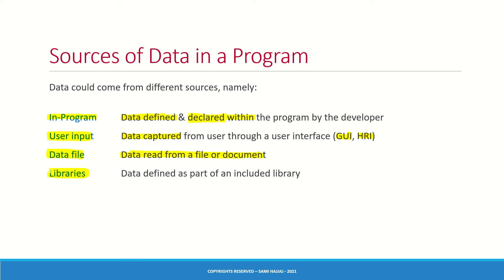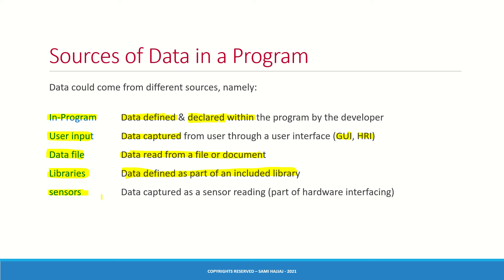A library is another source of data. When you include a library in your program, think of it as a friend's program written by somebody else — instead of rewriting their work, you include it and whatever information they defined becomes available to you. Data can also come from hardware: if you are dealing with an electromechanical system, you may have data captured by sensors — heat sensors, light sensors, microphones — that capture information and introduce it to your program.